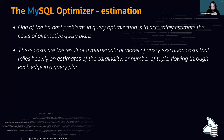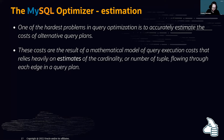The hardest problem in query optimization is accurately estimating the cost of all possible plans. A simple query may have only one plan, but with multiple tables and multiple columns in the WHERE condition, there can be many different plans the optimizer needs to estimate. The cost is calculated using mathematical models — the optimizer does not actually execute all plans, it estimates them.